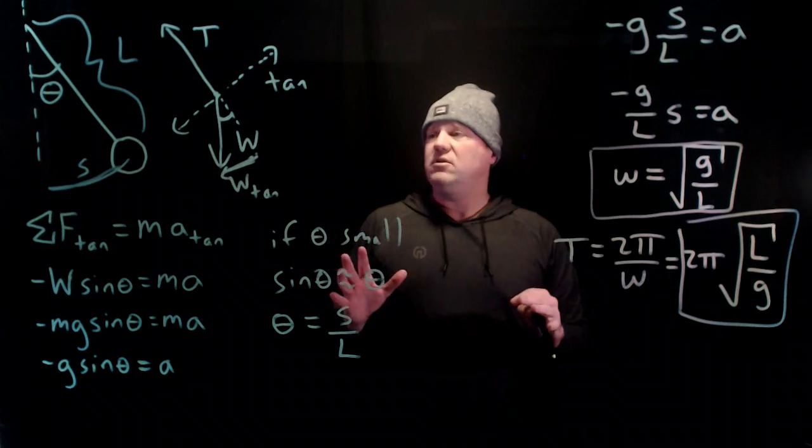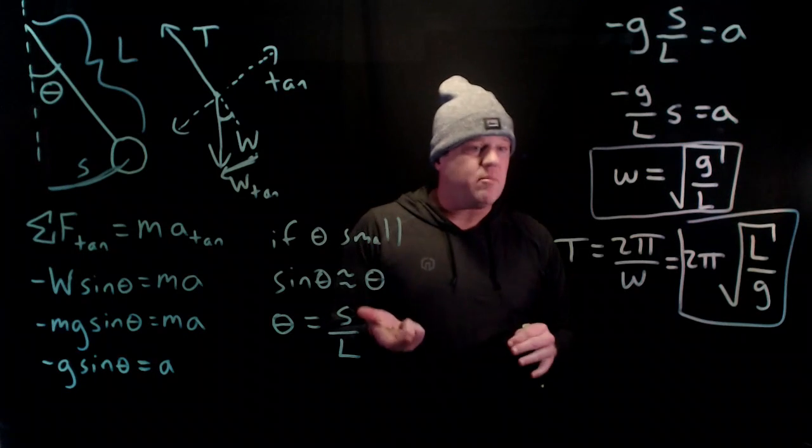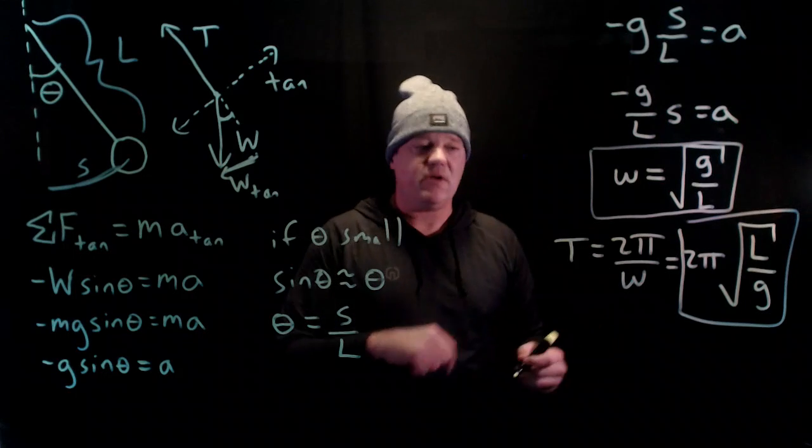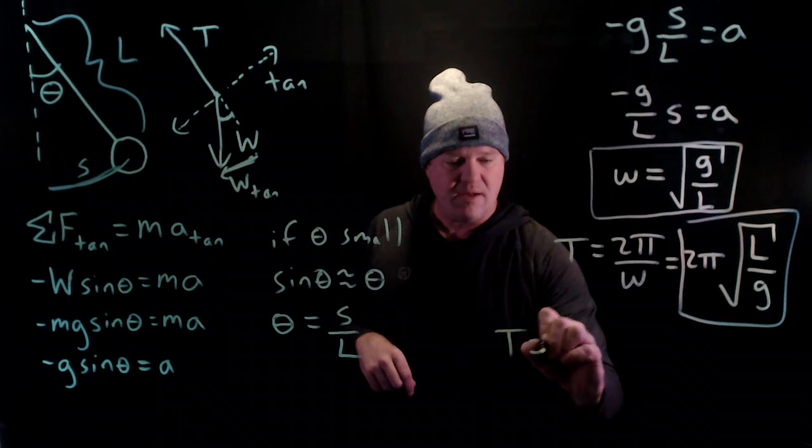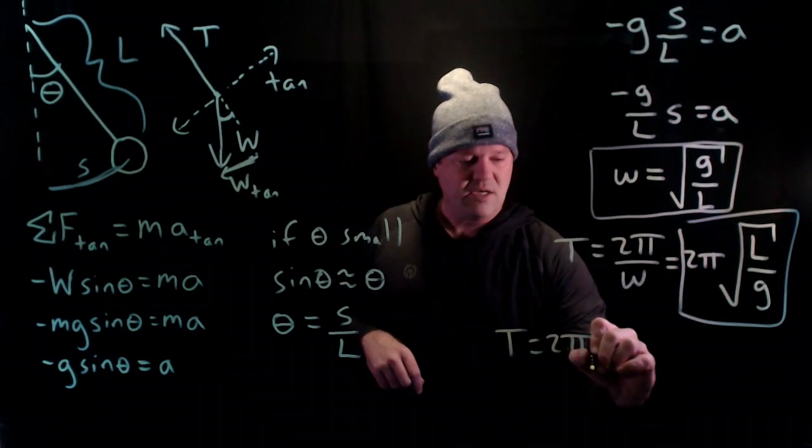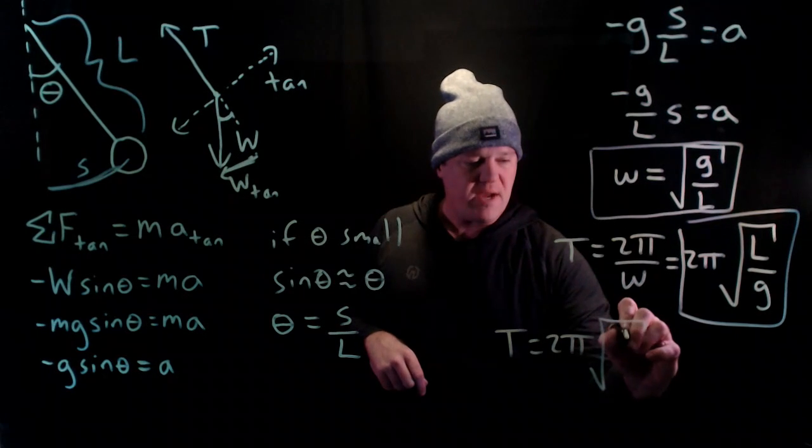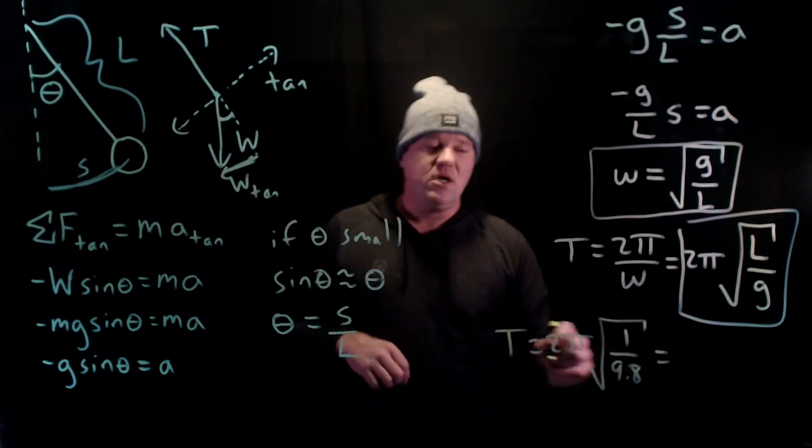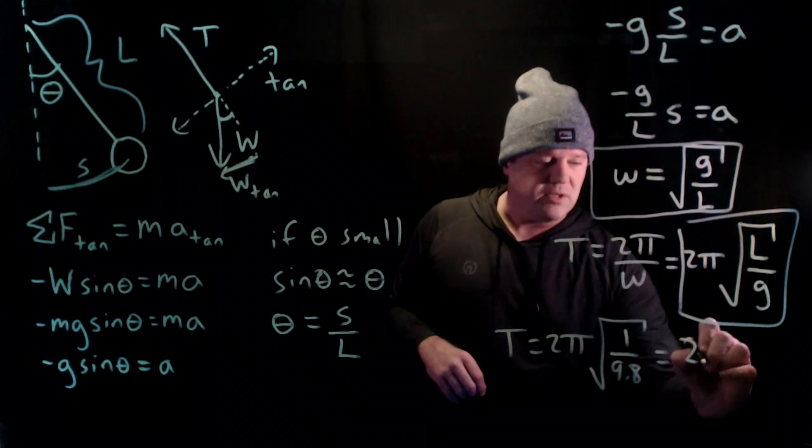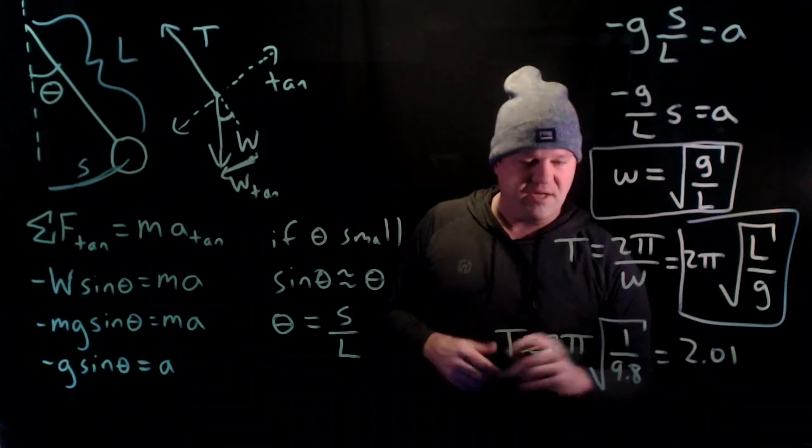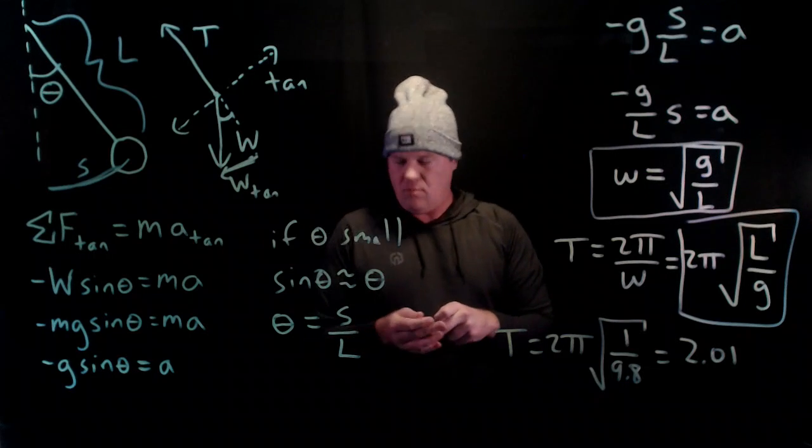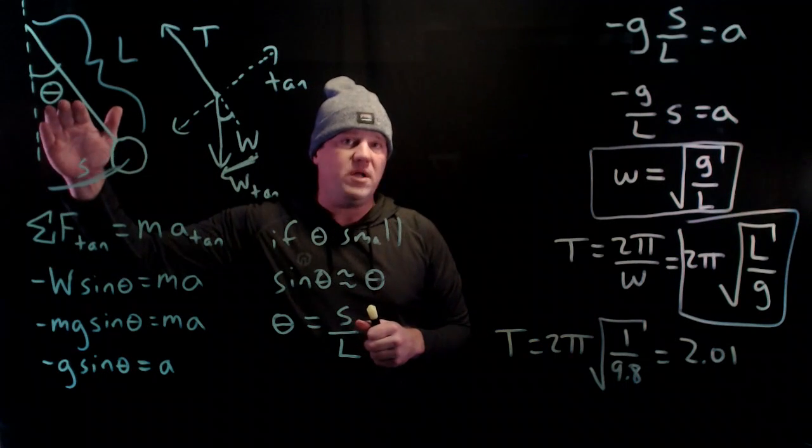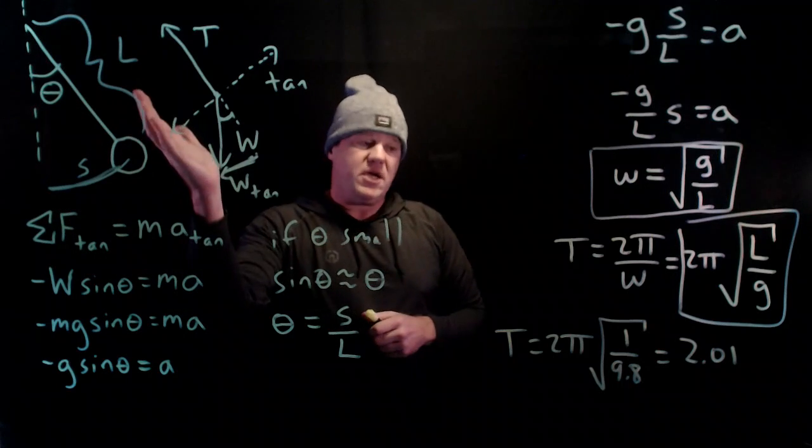So if we throw in L of 1 meter, throw in g of 9.8, what do we get? So let's write that down. 2 pi times square root of a length of 1 meter divided by 9.8. And I get just a little bit more than 2. So it's almost exactly 2. So if this is 1 meter long, it takes 1 second to swing the other side, another second to swing back.